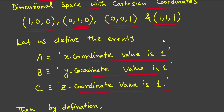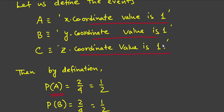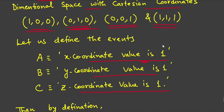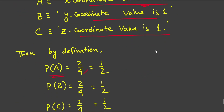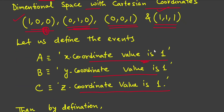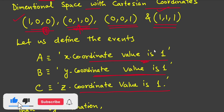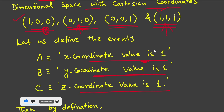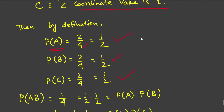Define event A as 'x-coordinate value is 1', event B as 'y-coordinate value is 1', and event C as 'z-coordinate value is 1'. There are four total points. P(A) = 2/4 = 1/2, since x = 1 for two points. Similarly P(B) = 1/2, since y = 1 for two points, and P(C) = 1/2, since z = 1 for two points.